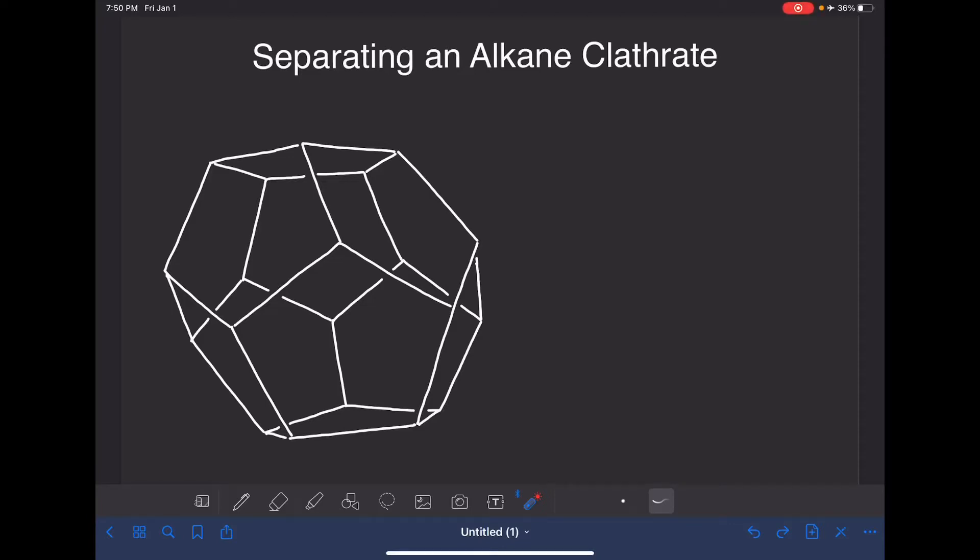A clathrate is a cage made out of small molecules. This is one example of a clathrate. They don't all have this exact same shape, but they all have some sort of complicated polyhedral shape like this. Clathrates, like any type of cage, are capable of trapping something on the inside. So a clathrate can hold a molecule on the inside of it.